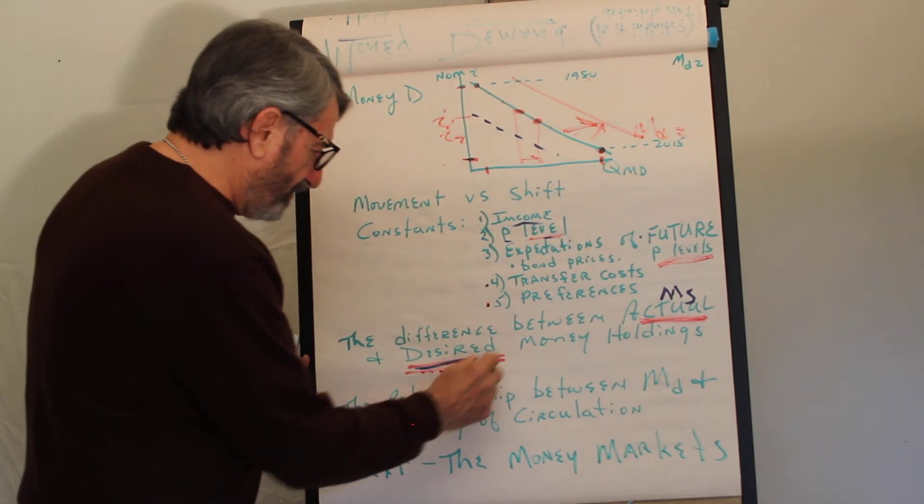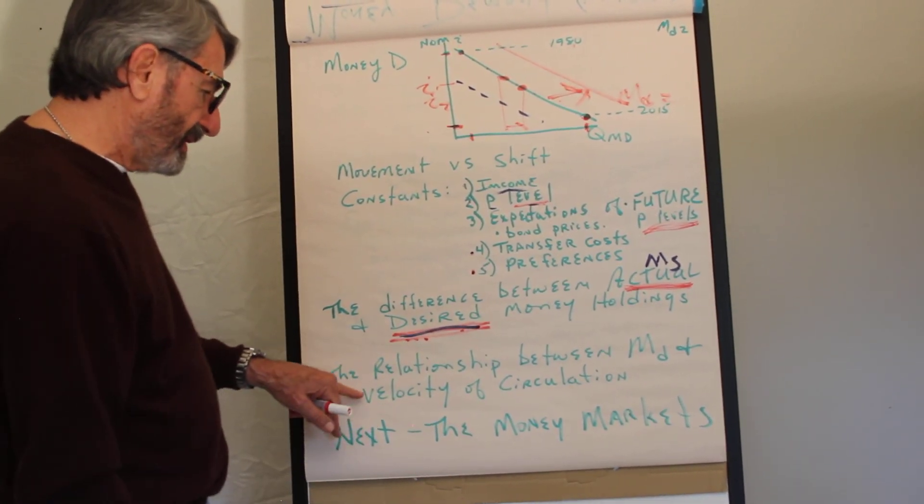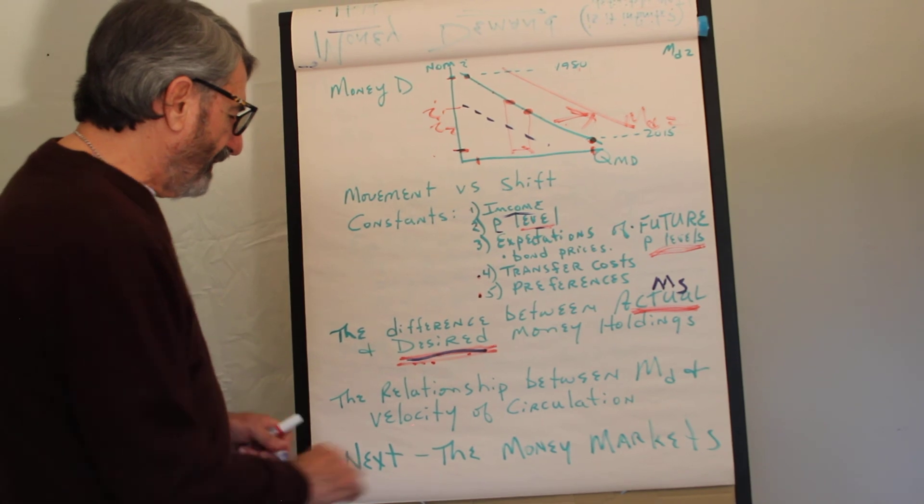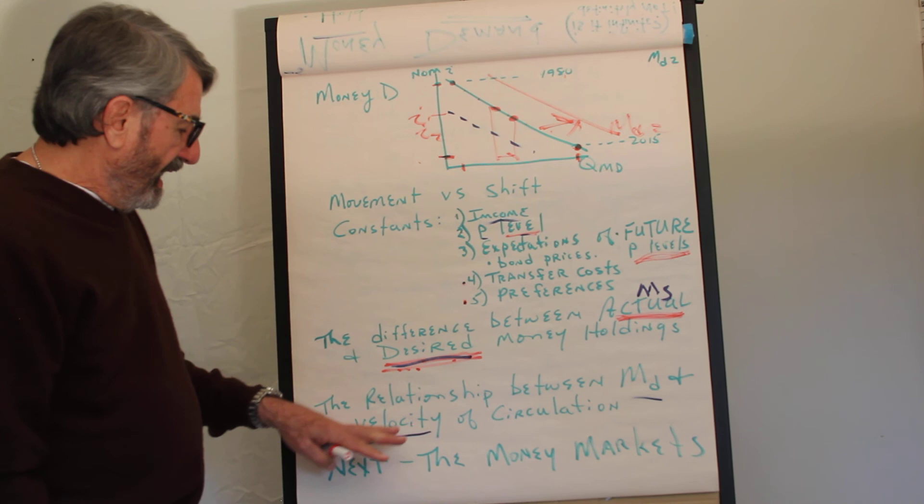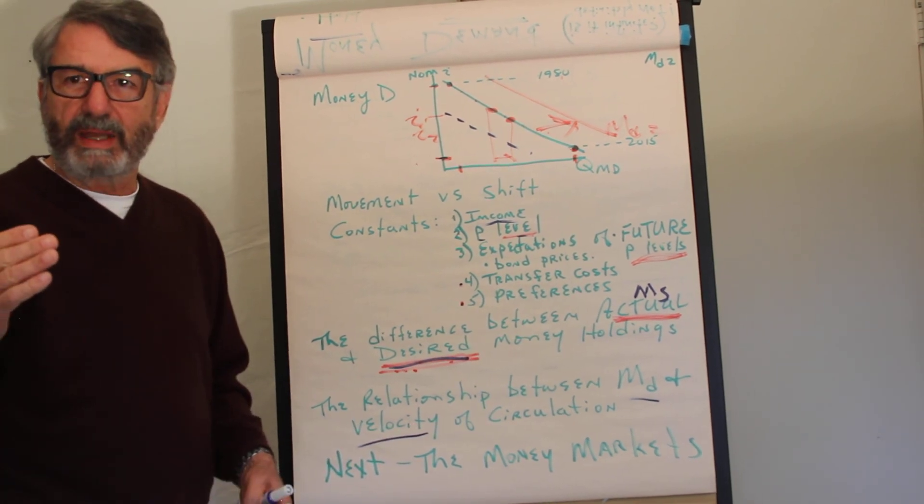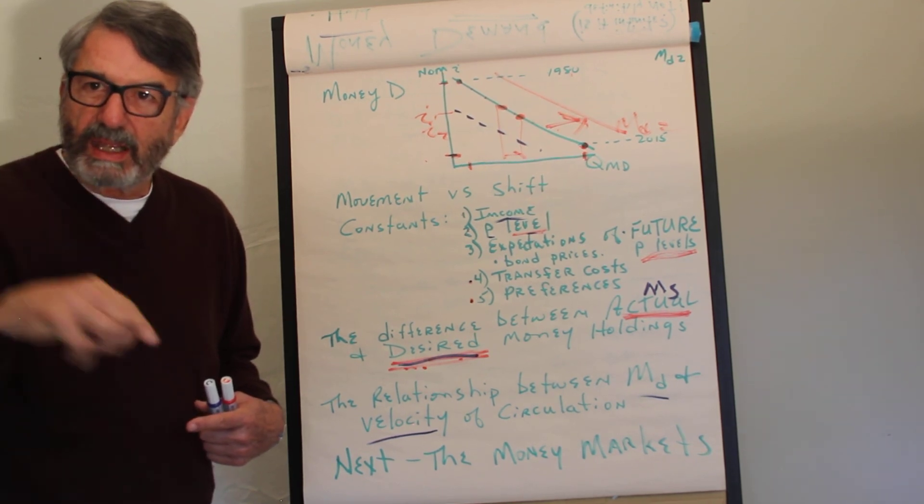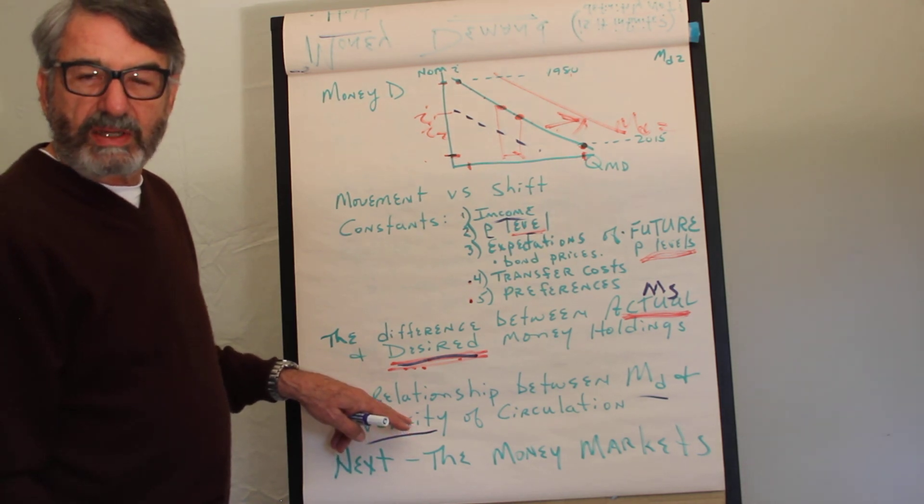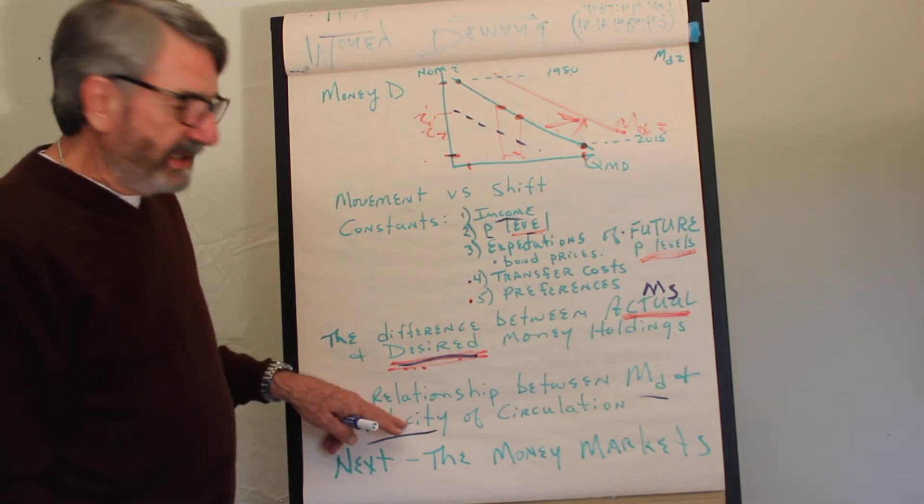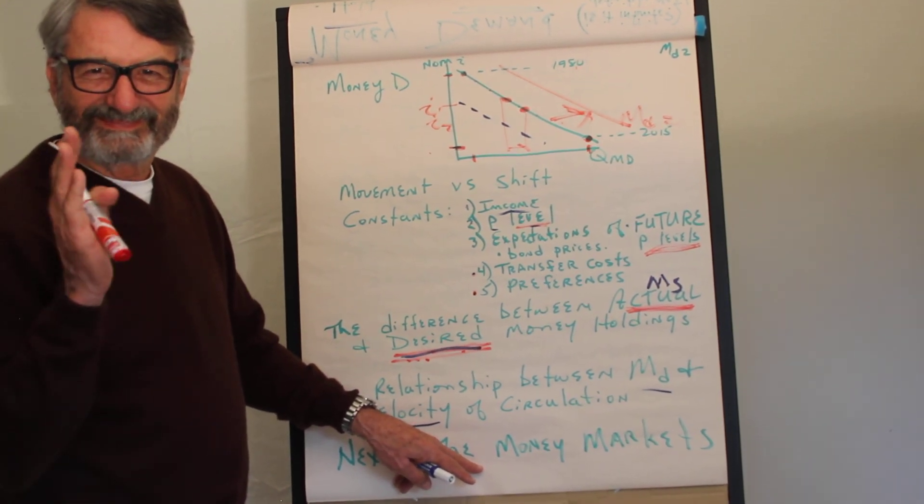So the difference between desired and actual money holdings is a big one. The other thing is velocity of circulation and money demand are inverses of each other. If people want to hold less money, they get rid of it and the velocity of circulation increases rapidly. There's an equation of exchange video that explains this well. And the next video gets further into this with the money markets. I think I'm finished.